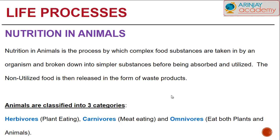We'll now take a look at nutrition in animals and how it takes place. Nutrition in animals involves complex food substances which are taken in by an organism and broken down into simpler substances before they are absorbed and utilized. The non-utilized food is released in the form of waste products.